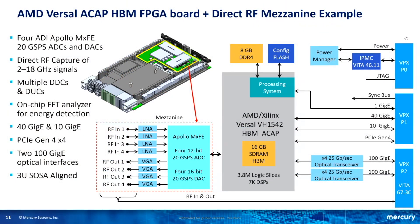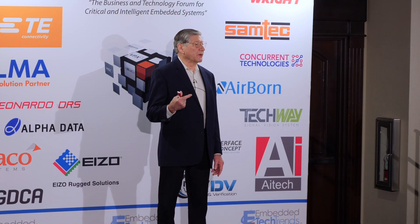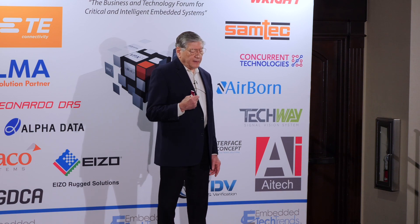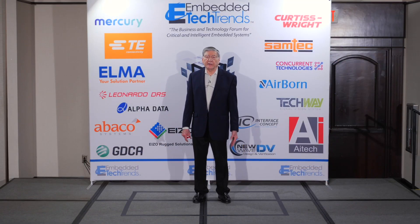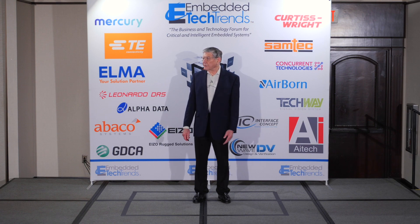Another Versal family features high bandwidth memory — tremendous memory bandwidth because the memory is embedded right in the FPGA itself. This suits compute-intensive applications requiring extremely high memory bandwidth. For this product we use a mezzanine card construct, and the first mezzanine product will be based on the new Analog Devices Apollo family MXFE, giving us four channels of 20 giga-sample per second input and 20 giga-sample per second D-to-A output. The flexibility here is that you can always swap in a new direct RF data converter when one is released by simply plugging it in.